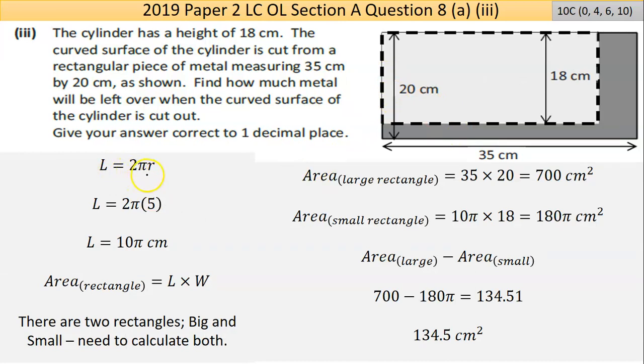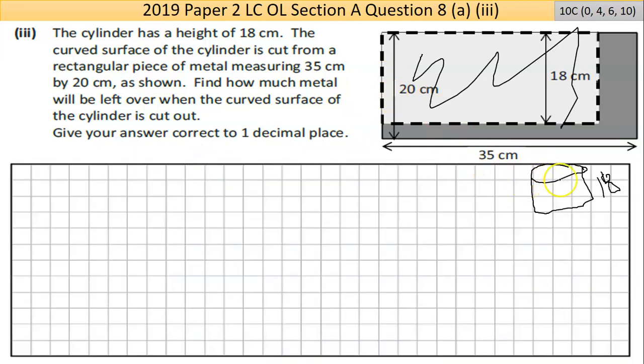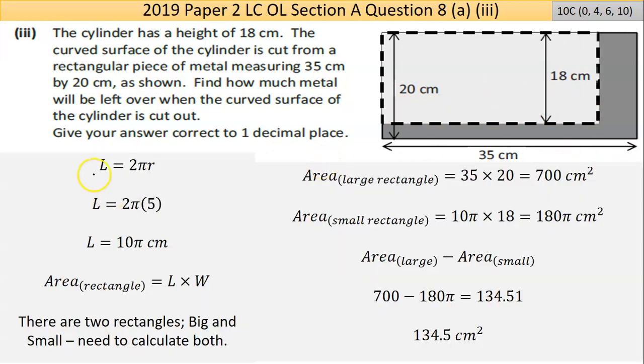The length of the cylinder all the way around is the same as the circumference of that circle. We're going to work that out first. So 2πr, the radius is 5. Put through the calculator, I get 10π. The area of the large rectangle is length by width, which is 35 by 20, equals 700 cm². The area of the smaller rectangle is 10π by 18, which is 180π cm².